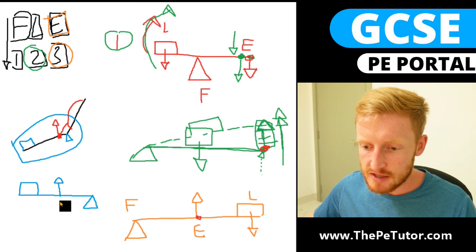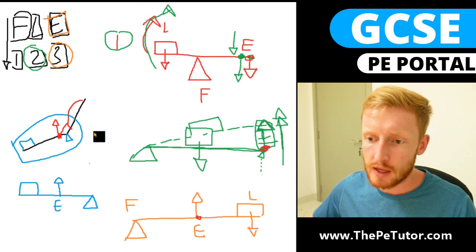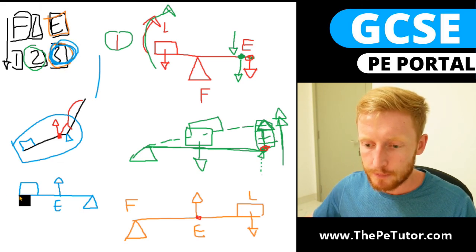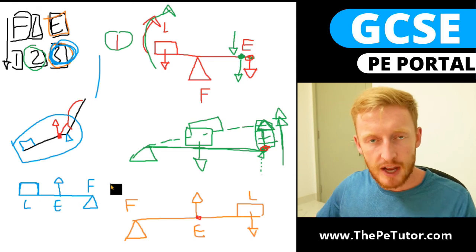So if the effort is in the middle, FLE one two three, we know it's the third class lever system. The load is at this end and the fulcrum is there. So tennis stroke or the forehand tennis stroke in tennis at the elbow is a third class lever system.